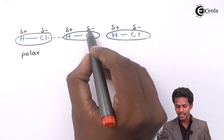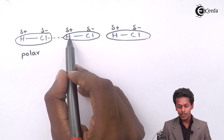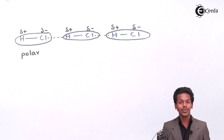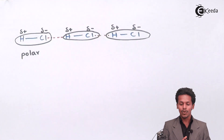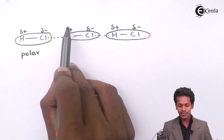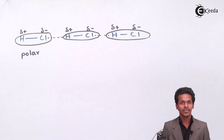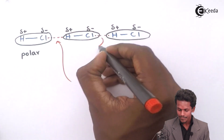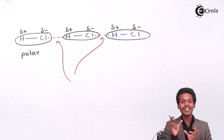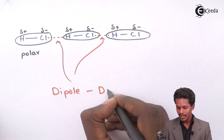The partial negative charge on Cl initially attracted to H within the same molecule will try to attract the positive charge of another molecule, forming an inter-molecular force of attraction. This force of attraction is nothing but the electrostatic force of attraction, because H is positive and Cl is negative — and we know that opposite charges attract each other. This interaction between one dipole molecule and another dipole molecule is therefore called dipole-dipole interaction.